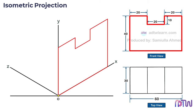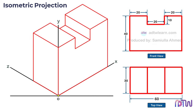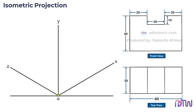Let's first understand how this object looks in an isometric view. Consider this front view on the XY plane — this is how it looks. By looking at the top view we can see the front view is just extruded by 30 millimeters. This is how the object will look in an isometric view — this is the front view and this is the top view given at the bottom.